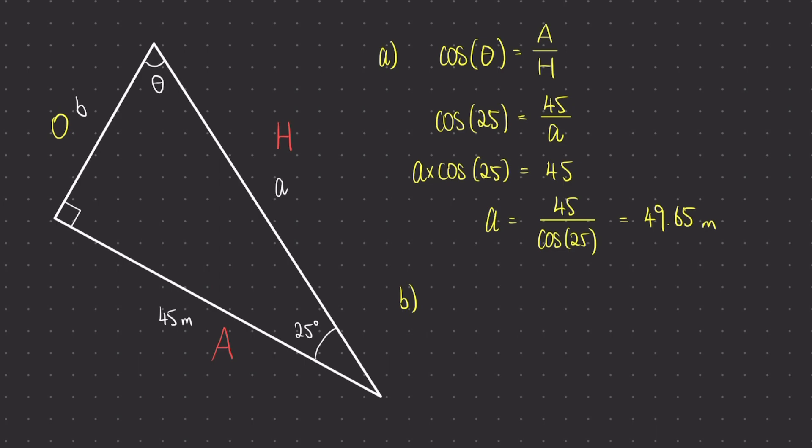The equation that we need is going to be tan theta is equal to the opposite over the adjacent. Let's substitute in the variables that we know. We can see that we need to times both sides by 45, and now placing this into the calculator, we find that side length b is 20.98.